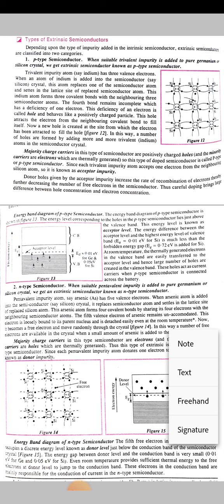Each indium impurity atom accepts one electron. The holes given by the acceptor impurity increase the rate of recombination of electrons, thereby decreasing the number of electrons in the semiconductor.